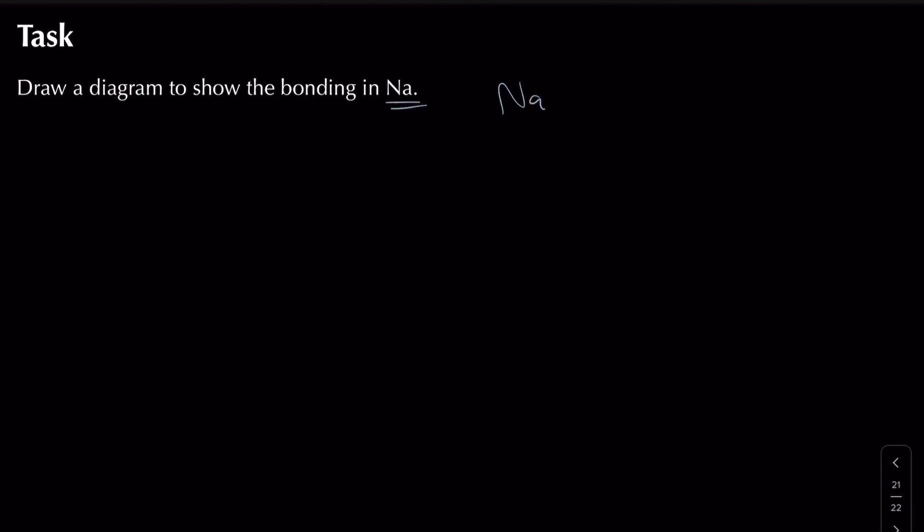In this case we've got sodium. Sodium is going to exist as an atom with one electron in its outer shell, but we know that we end up forming sodium ions and then one delocalised electron per sodium ion.